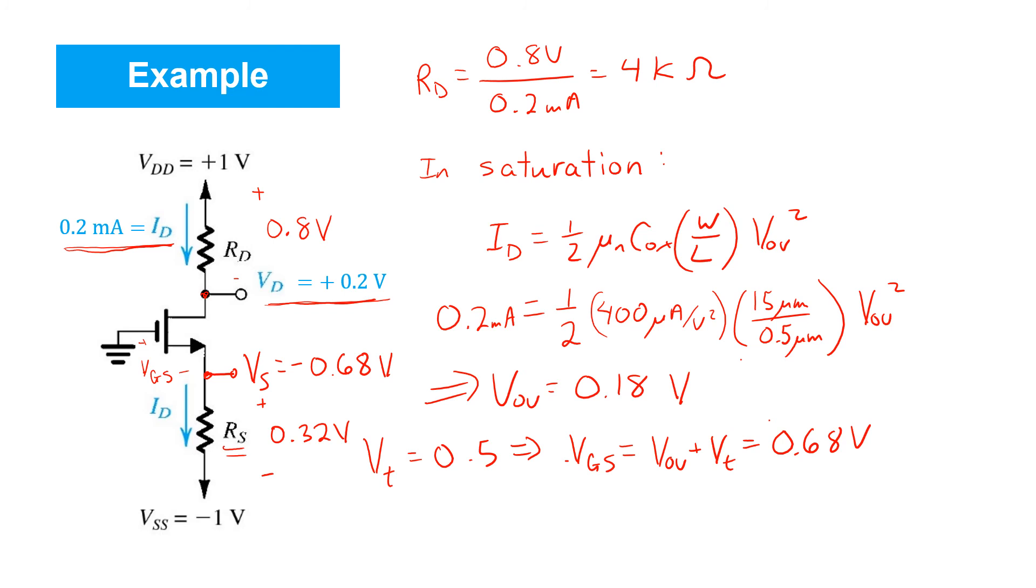And then, since the drain current is equal to the source current, we know that there's 0.2 milliamps flowing through that resistor RS, giving rise to that 0.32 volt drop. So we can finally solve for RS. And it turns out we get a value of 1.6 kilo ohms. So that's it. That's what we're asked to find, RS and RD.